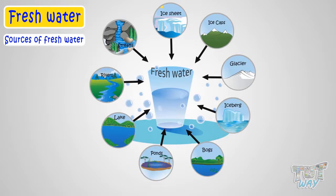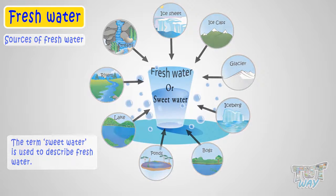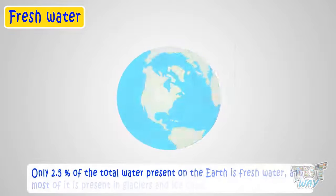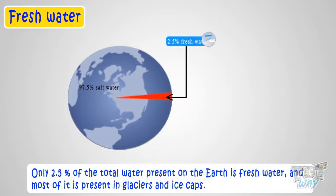The term sweet water is used to describe fresh water in contrast to salt water, which is present in seas and oceans. Kids, only 2.5% of the total water present on the earth is fresh water. And most of it is in glaciers and ice caps.